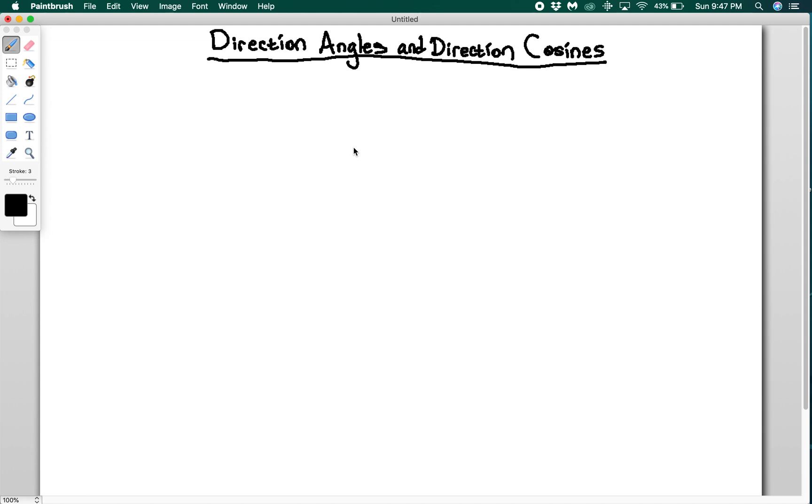The last video in our segment on 3D vectors is about direction angles and direction cosines. So what are these? Well, if I draw my 3D coordinate system, let's say this will go to x, y, and z.